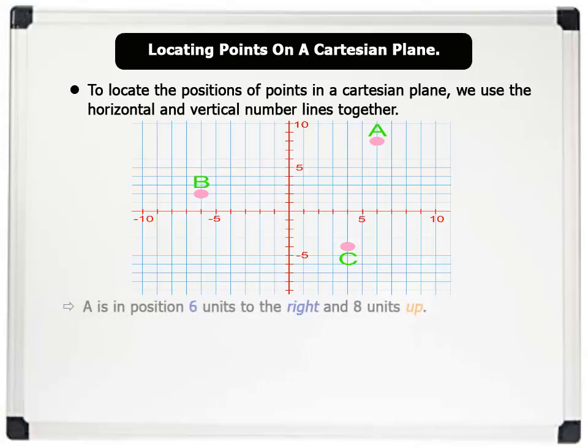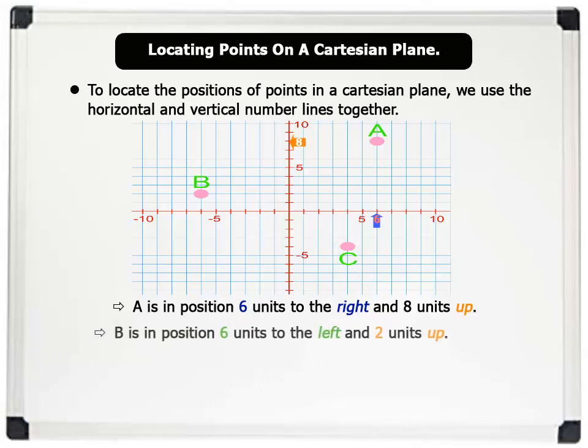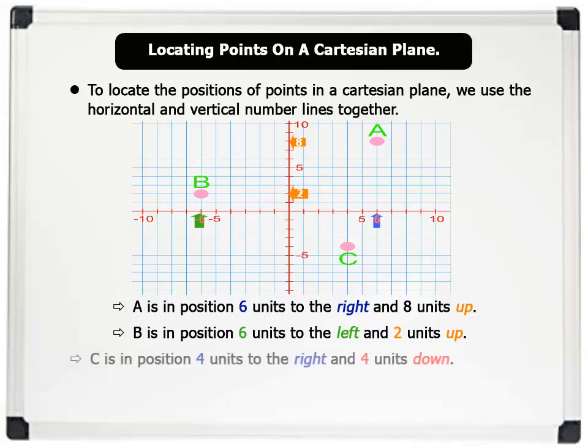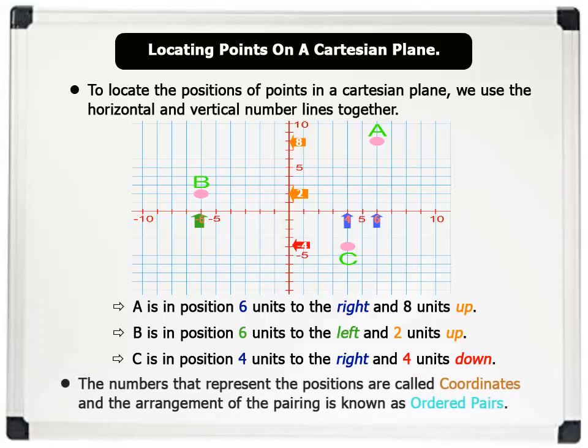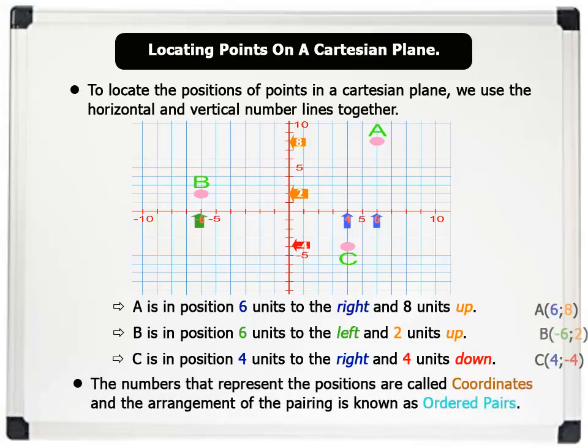A is in position 6 units to the right and 8 units up. B is in position 6 units to the left and 2 units up. And C is in position 4 units to the right and 4 units down. Note that the numbers that represent the positions are called coordinates. And the arrangement of the pairing is known as ordered pairs.